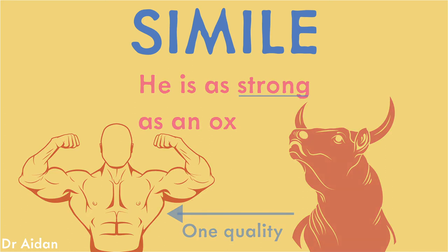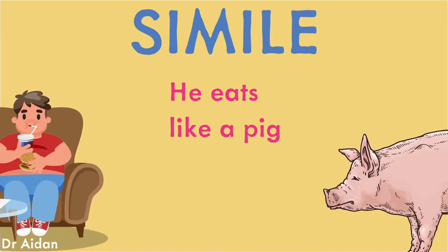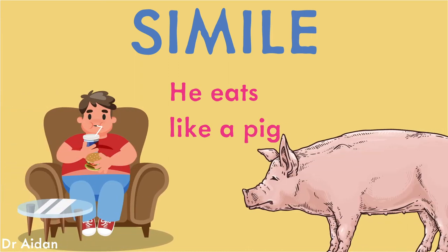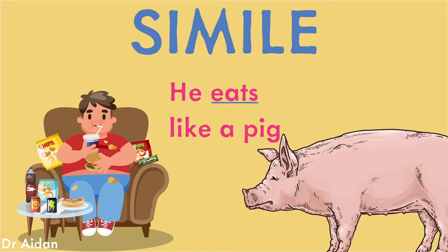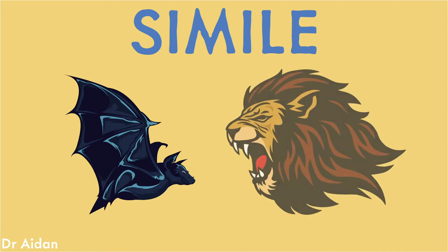Now what about this? He eats like a pig. Here we focus on the one quality of how a pig eats. This might be the quantity of food or messy eating and we are transferring that to a person. These three examples use the real or perceived qualities of animals and there are many others such as blind as a bat or brave as a lion.